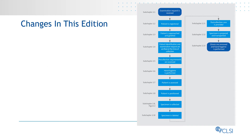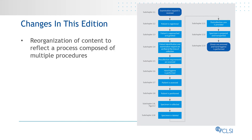Several changes were made in this edition. One of the principal changes is content reorganization to reflect a process composed of multiple procedures, consistent with the incorporation of quality management system principles into CLSI documents. This standard provides sequential procedures that make up the process of successful, safe capillary blood specimen collections. The Quality System Essentials, or QSEs, are foundational building blocks that function effectively to support the laboratory's path of workflow. Adherence to the QSEs ensures that collection is performed at a higher level of overall quality.